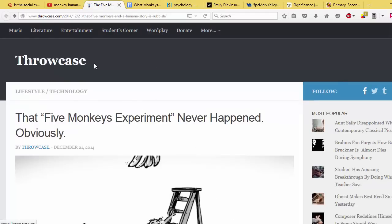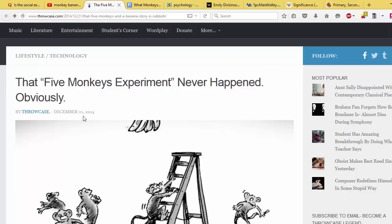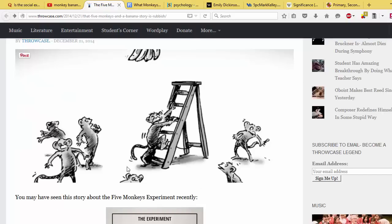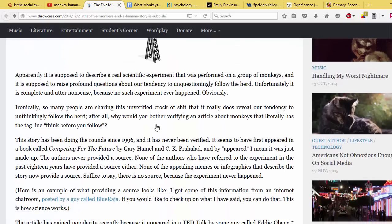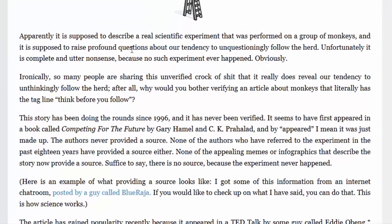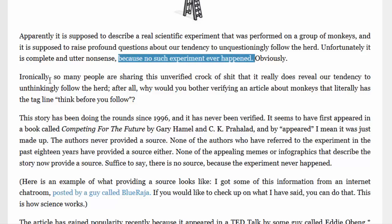Now this article that I've got here is from Throwcase. This was published on December 21, 2014, and here is an illustration of that experiment that I just showed you before. Let me read out a section of the article. Quote: Apparently it is supposed to describe a real scientific experiment that was performed on a group of monkeys, and it is supposed to raise profound questions about our tendency to unquestioningly follow the herd. Unfortunately, it is complete and utter nonsense because no such experiment ever happened. Ironically, so many people are sharing this unverified crock of nonsense that it really does reveal our tendency to unthinkingly follow the herd.